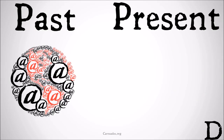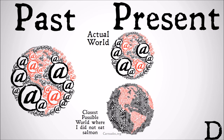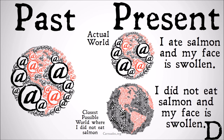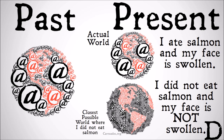Imagine we have the past and we have the present. We have the actual world in the present, and we have the closest possible world where I did not eat salmon. I did eat salmon in the actual world, and my face swelled up. If in the closest possible world where I did not eat salmon my face is still swollen, then under a counterfactual theory of causation we would say the salmon did not cause my face to swell. Whereas if the closest possible world where I did not eat salmon is a situation where my face is not swollen, that would be the truth-maker for the causal claim that salmon caused my face to swell.